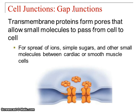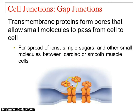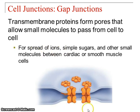Last are gap junctions, where you've got two channel proteins on each of the different cells so that ions can travel from one cell through to the next. These are also found in cardiac muscle tissue — they allow our pacemaker cells to start a signal and have it travel cell to cell so we can have a heartbeat.